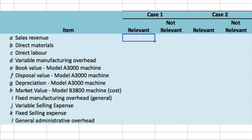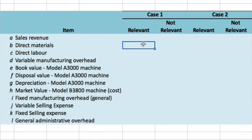What is required: place an X in the appropriate column to indicate whether each item is relevant or not relevant. I've replicated the different costs on the screen, with Case 1 and Case 2 listed. For irrelevant costs — those that have either already been incurred or will not differ among the alternatives — let's just eliminate those first. That's the straightforward way to do it.